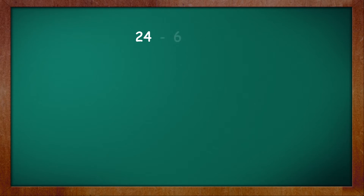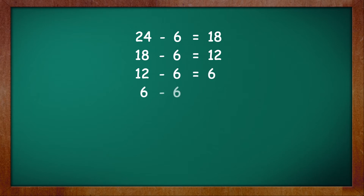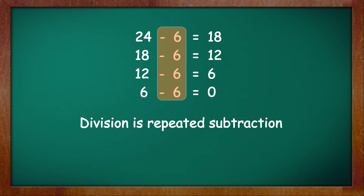As you can see, from 24 she first took out six candies: 24 minus 6 is equal to 18, then 18 minus 6 is equal to 12, from 12 minus 6 is equal to 6, and 6 minus 6 is equal to 0, which means all the candies were distributed or shared equally. Did you notice that while sharing equally we subtracted the same number more than once? This means that equal sharing, that is division, can also be called repeated subtraction of the same number.